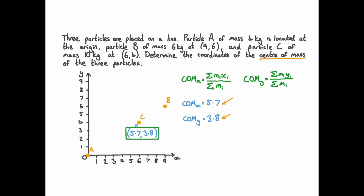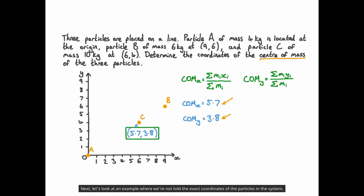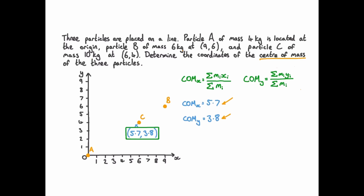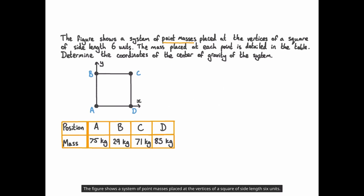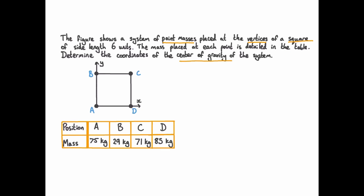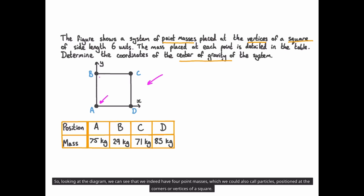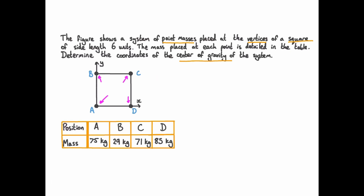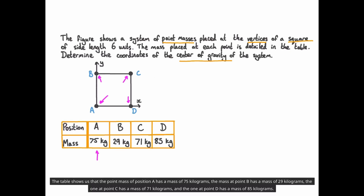And this is the final answer to our question. Next, let's look at an example where we're not told the exact coordinates of the particles in the system. The figure shows a system of point masses placed at the vertices of a square of side-length 6 units. The mass placed at each point is detailed in the table. The point mass at position A has a mass of 75 kg, the mass at point B is 29 kg, the one at point C is 71 kg, and the one at point D is 85 kg.